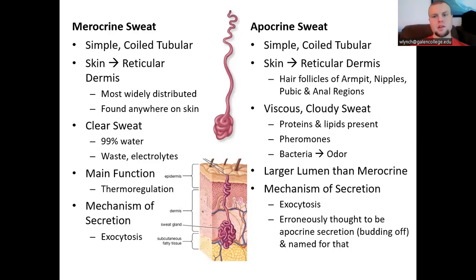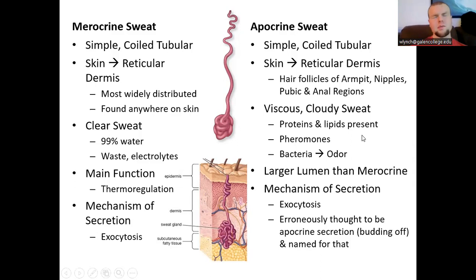Apocrine glands are also simple coiled tubular glands in the reticular dermis but are only found in certain regions: the armpit or axillary region, around the nipples, and in the pubic and anal regions. Their sweat contains more substance — proteins, lipids, and pheromonal concentrations — and may contain bacteria, which is why apocrine sweat can cause body odor. They have a very large lumen to accommodate these additional substances, and their mechanism of secretion is also exocytosis.